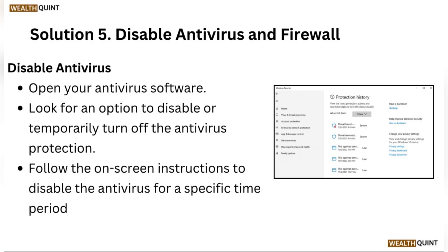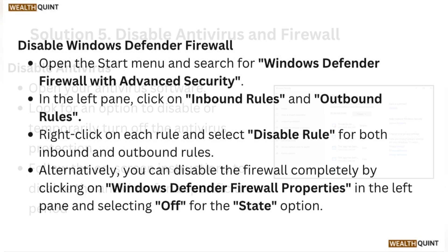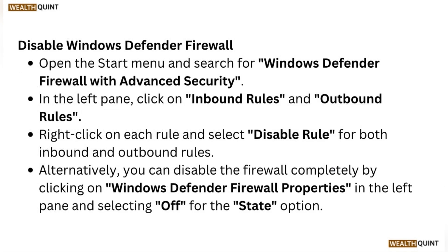Solution five: disable antivirus and firewall. To disable antivirus, open your antivirus software and look for an option to disable or temporarily turn off the antivirus protection. Follow the on-screen instructions to disable the antivirus for a specific time period. To disable Windows Defender Firewall, open the Start menu and search for Windows Defender Firewall with Advanced Security.